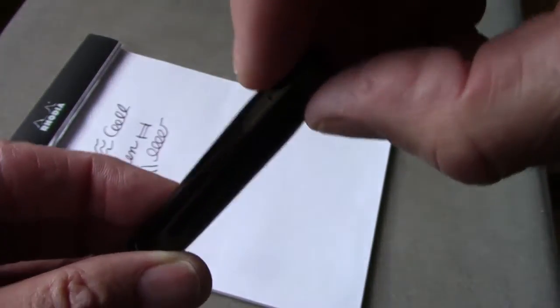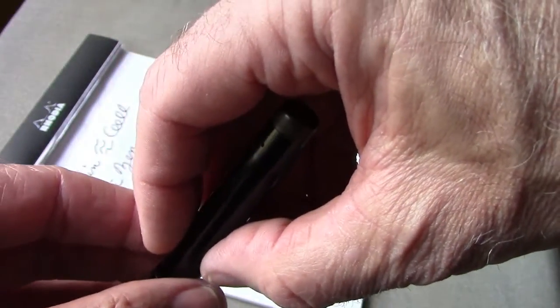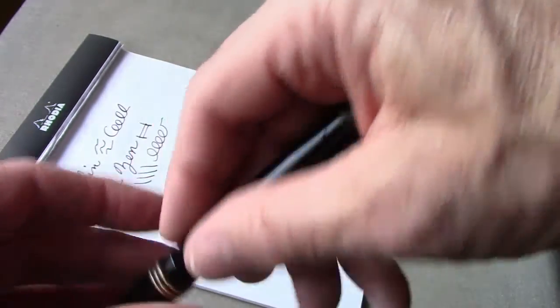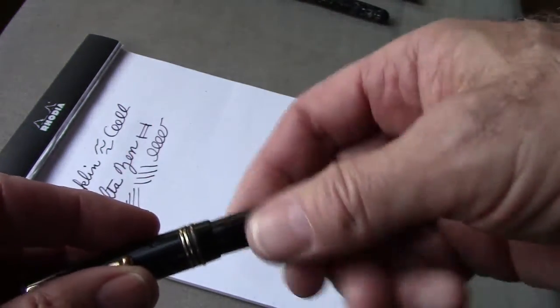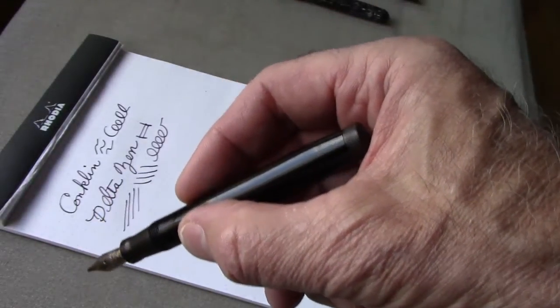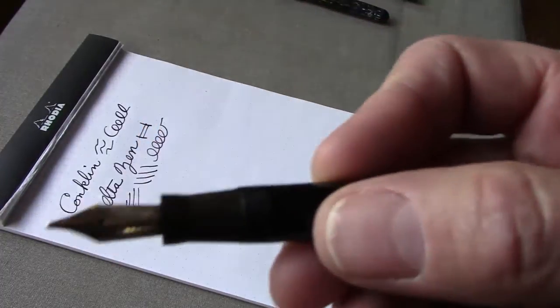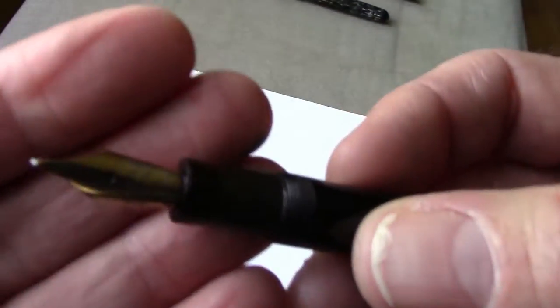You turn it counter-clockwise, and there's a bar that extends down from this knob, and that bar twists and compresses the rubber sack inside. You could do that before or during your insertion of the section into the ink. You see the bubbles come out, and then you turn it clockwise and reseed it, and that lets the bladder expand and the ink pen gets filled with ink.